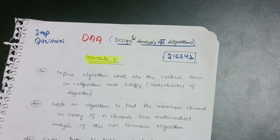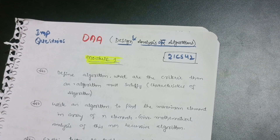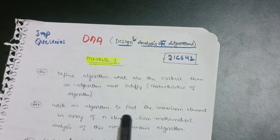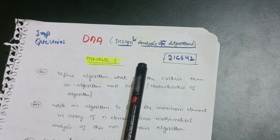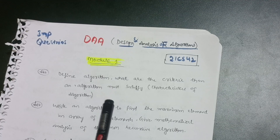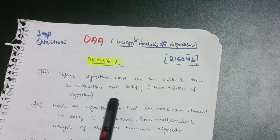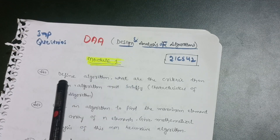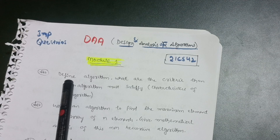Hello everyone, welcome back to my channel. In this video today we will discuss some important questions related to DAA, which is the computer science team subject Design and Analysis of Algorithms, subject code 21CS42. Let's start with the module first without wasting any time.